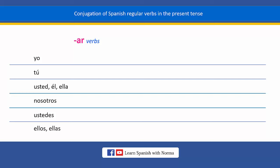Many Spanish verbs are completely regular, meaning that they follow a specific pattern of conjugation. In Spanish, there are three categories of verbs. One group of Spanish verbs ends in AR. Remember that the AR verbs represent about 80% of all the Spanish verbs. These are the endings we use to conjugate all Spanish regular verbs that end in AR.